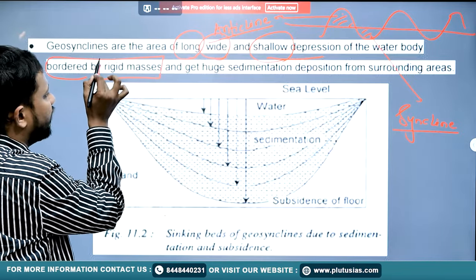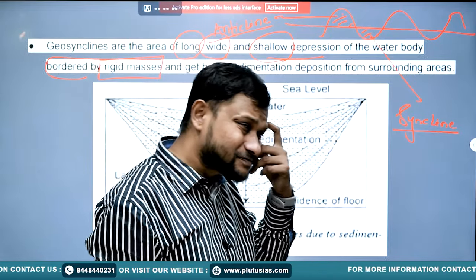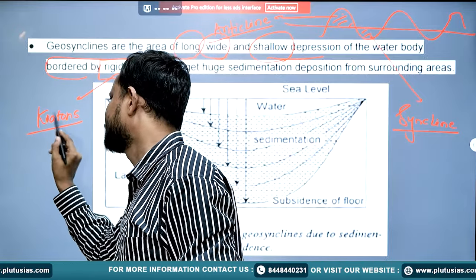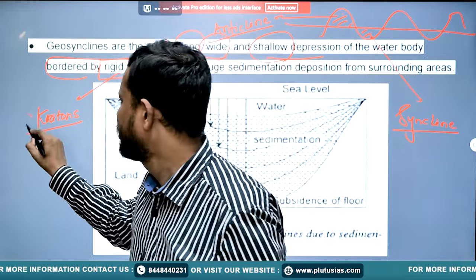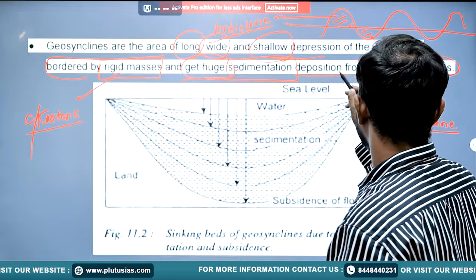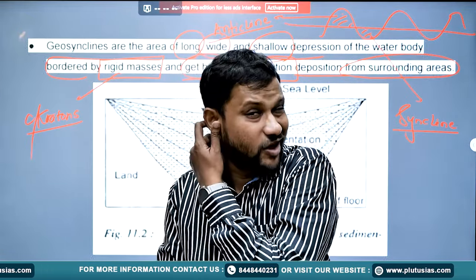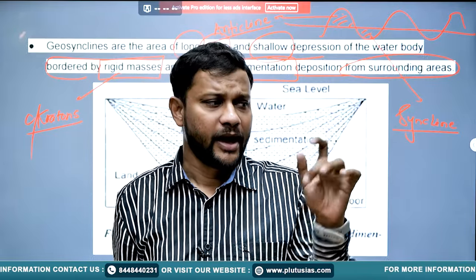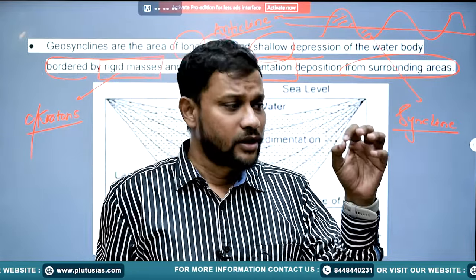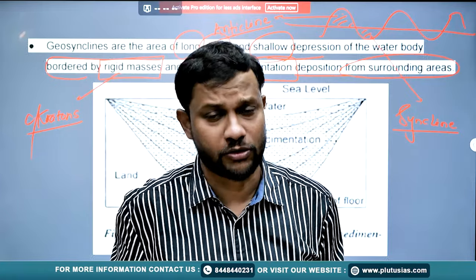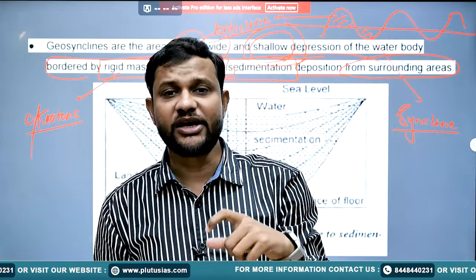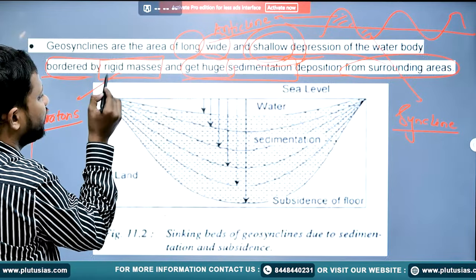This depression is bordered by rigid masses — hard structures known as cratons. These cratonic masses receive sedimentation and deposition from their surrounding area. So geosyncline is simply a water body that is a long stretch of hundreds and thousands of kilometers, narrow and wide depending on its position and location, and it is a shallow depression that gets deeper with continuous sedimentation.